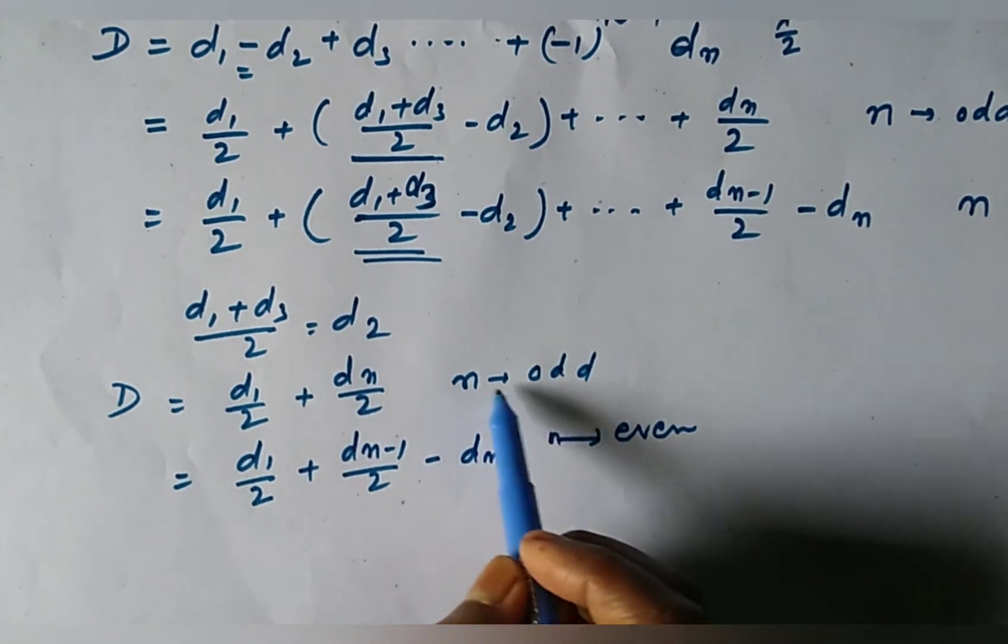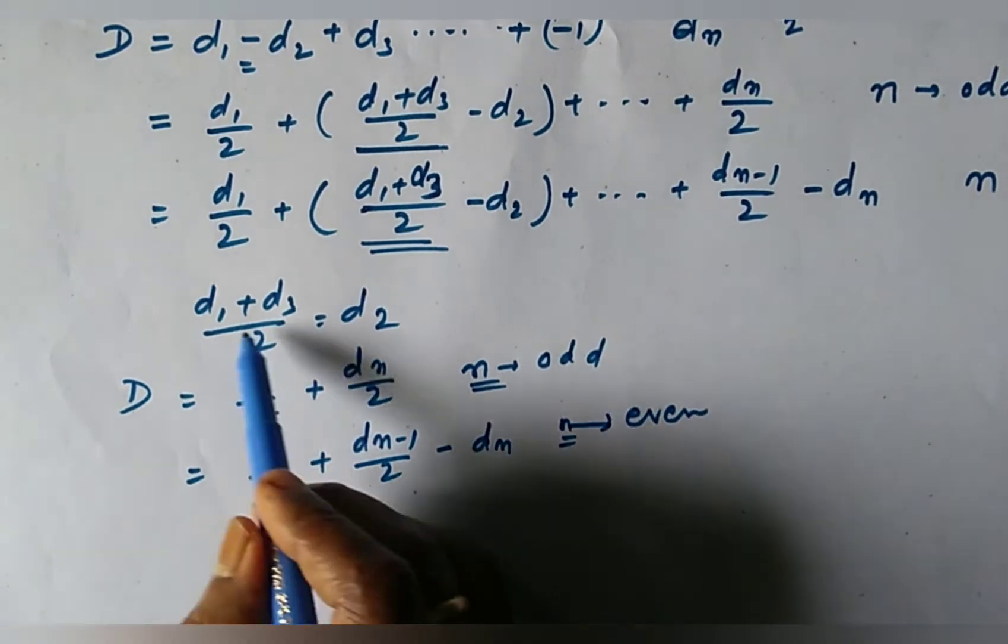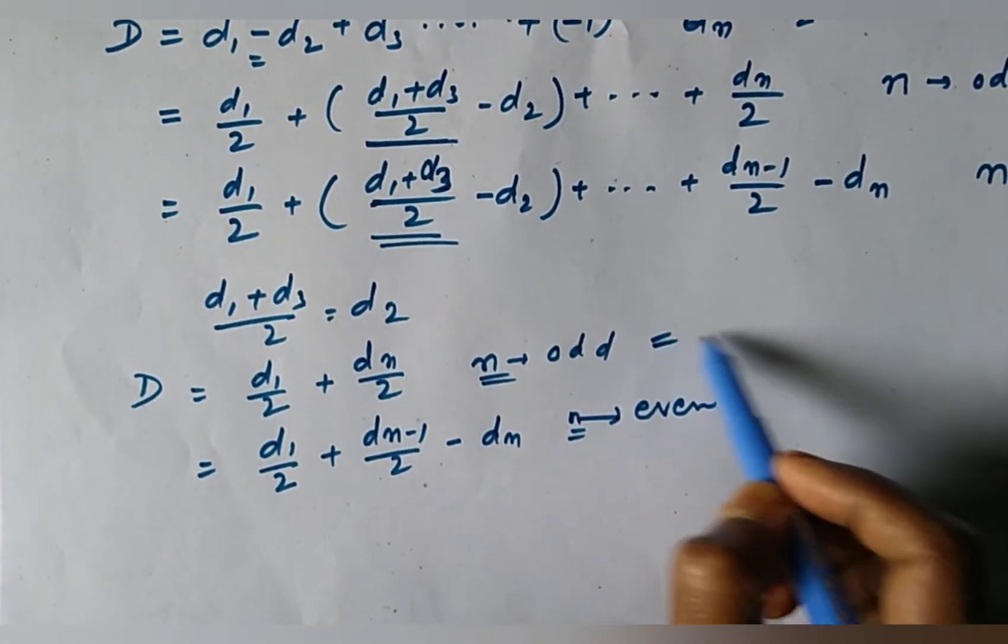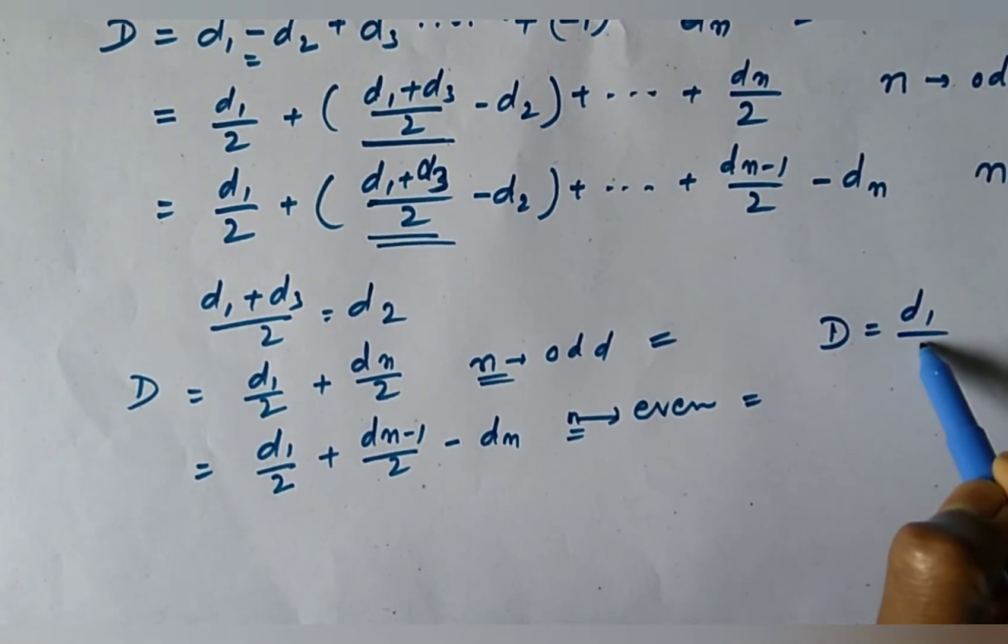Now, if n is large, very large, then we may simplify both terms for odd n and for even n as D equals D1 by 2.